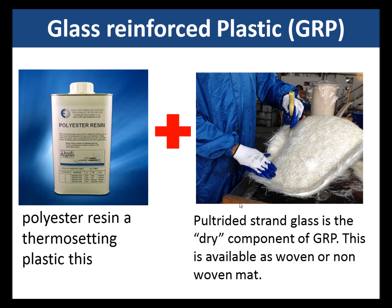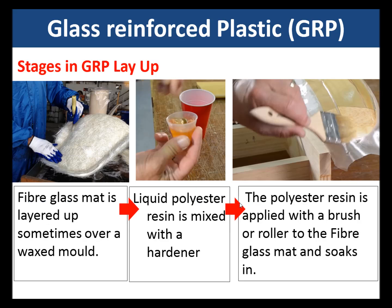Let's look at GRP. GRP is a polyester resin, which is a thermosetting plastic, and that is mixed with stranded glass — the dry component — which is available in various forms: woven or non-woven mats. Those are the two parts of the composite material which make GRP.